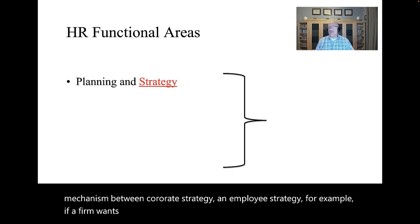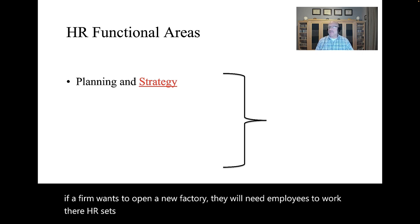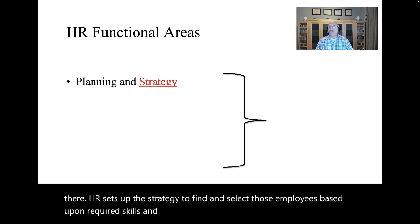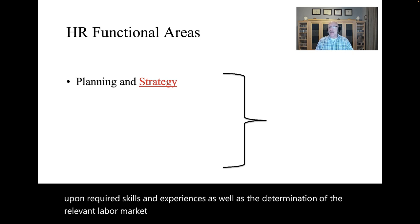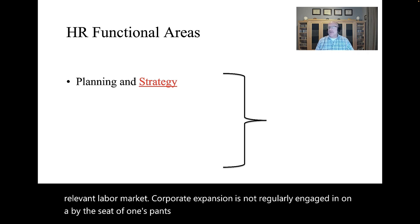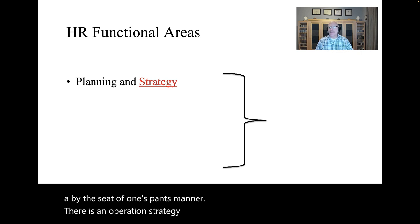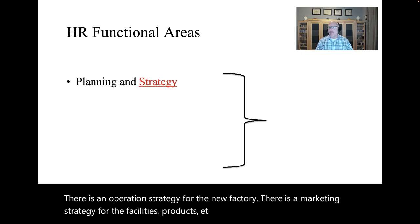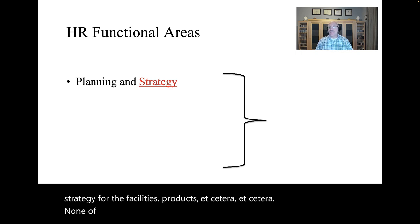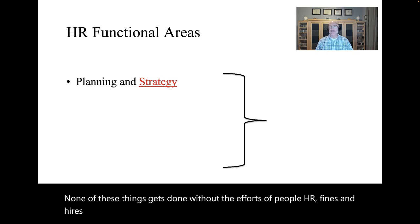For example, if a firm wants to open a new factory, they will need employees to work there. HR sets up the strategy to find and select those employees based upon required skills and experiences, as well as the determination of the relevant labor market. Corporate expansion is not engaged in on a by-the-seat-of-one's-pants manner. None of these things gets done without the efforts of people. HR finds, hires, and appraises the performance of these people.